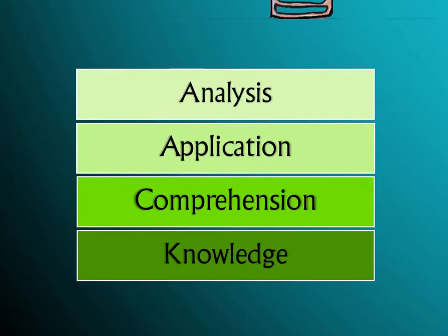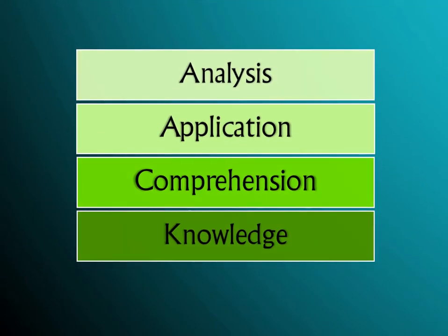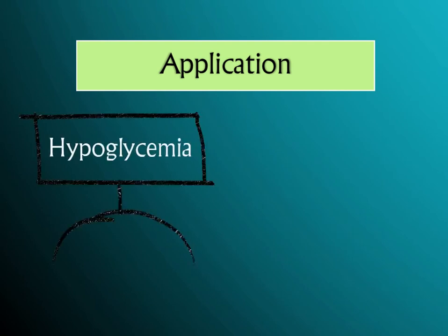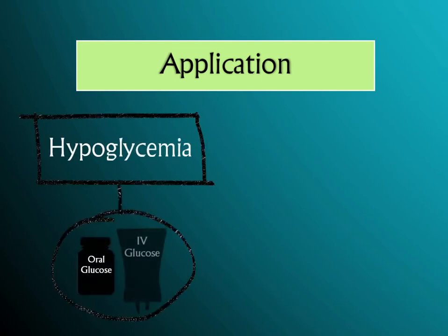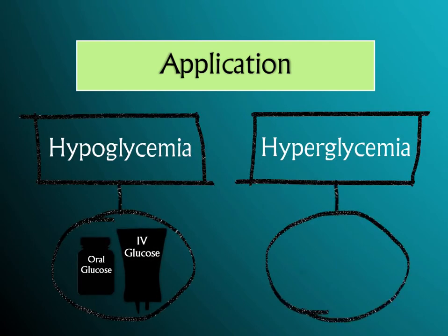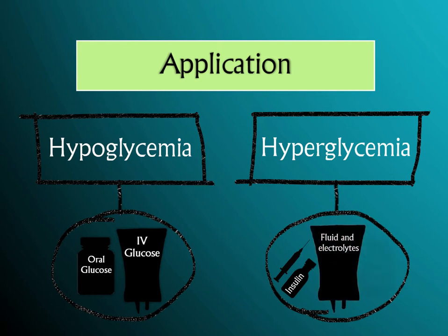you should be able to answer that it is because liver cells are bathed with a mixture of venous and arterial blood. The level of questioning that you want to aim for and sustain is the level of application. At this level, you must demonstrate an ability to make decisions like a nurse regarding the next course of action because of what you know and understand.